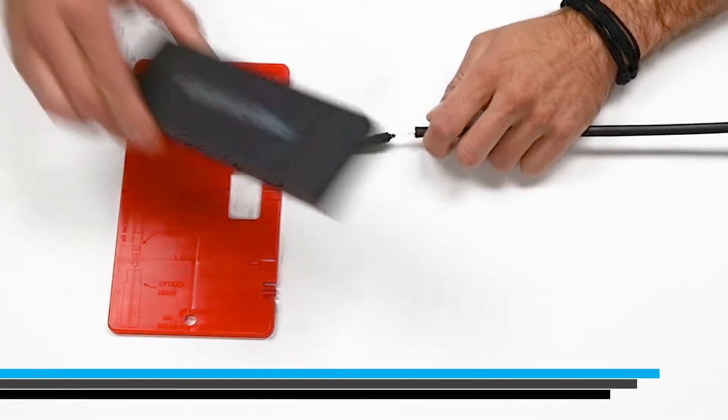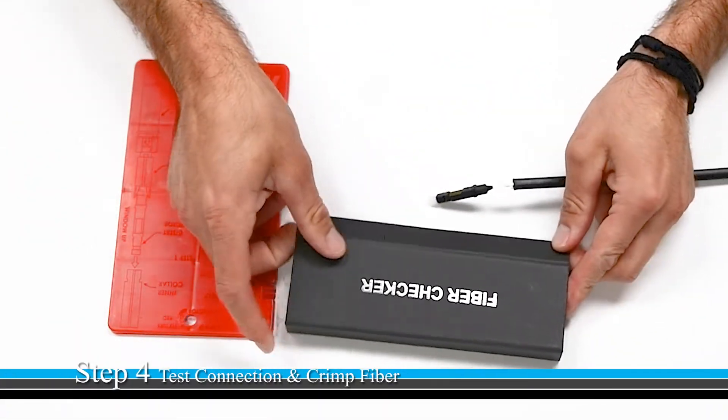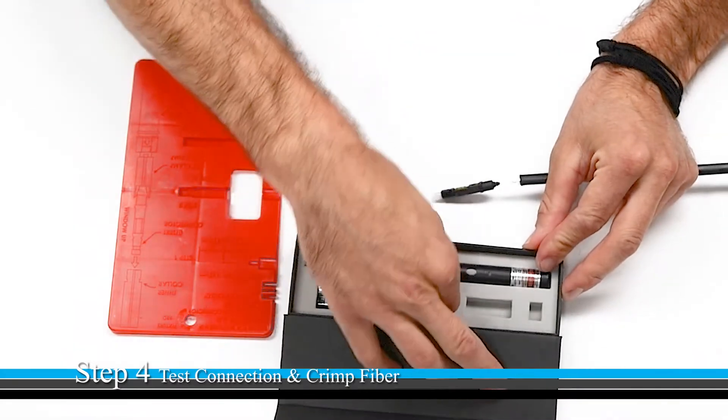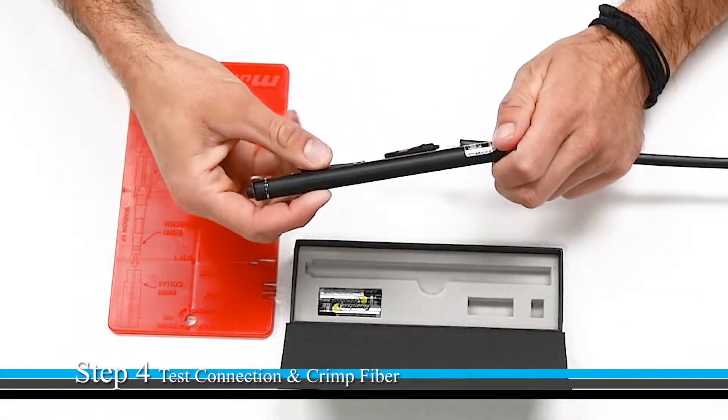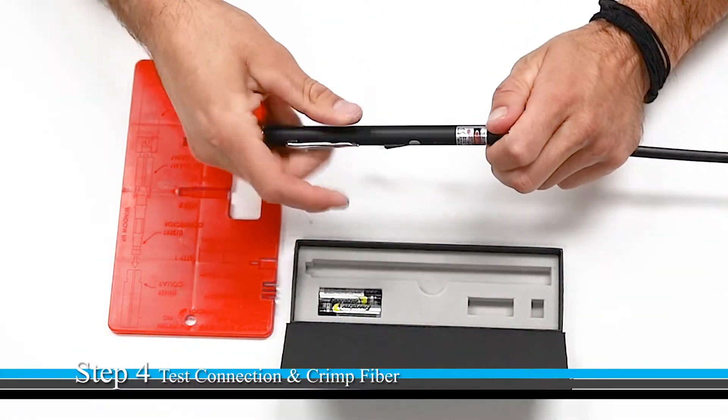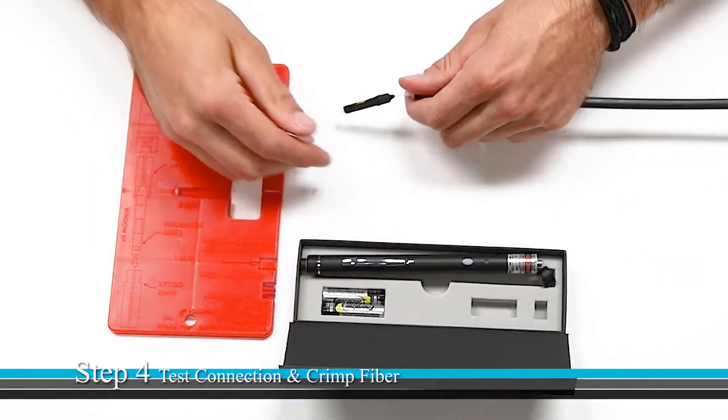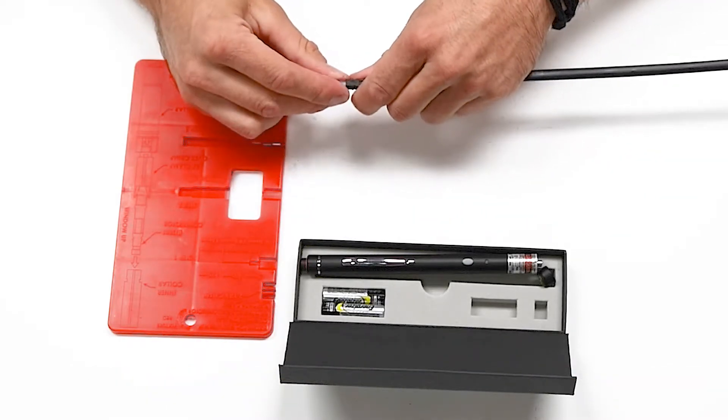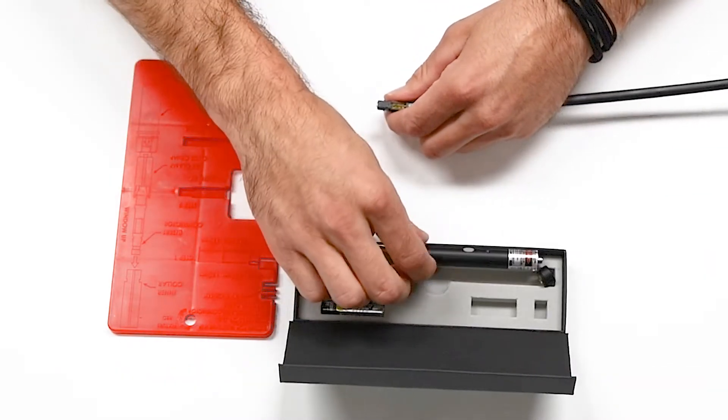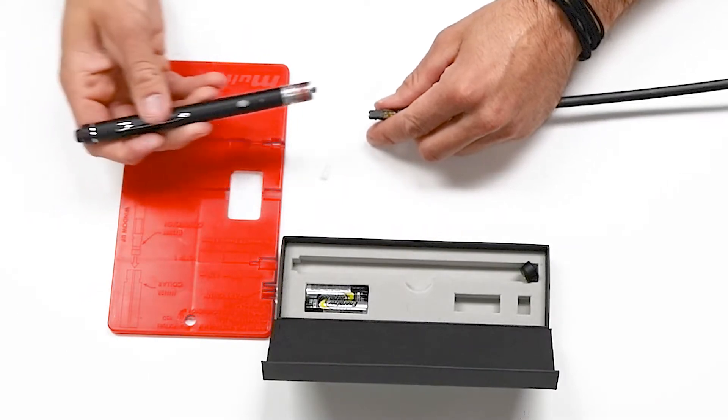After you've terminated the cable, be sure to use a visual fault locator to ensure that the fiber was properly seated within the connector. You'll be able to tell if it was properly seated if the light that appears in the window is dim. If the window appears to be bright when checking with a VFL, you can redo this process up to five times.